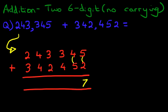The tens column, 4 plus 5 is 9. The hundreds column, 3 plus 4 is 7.